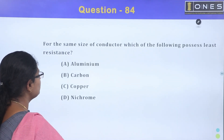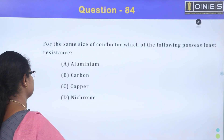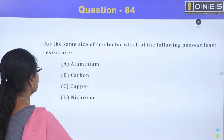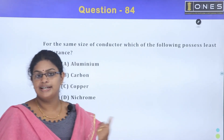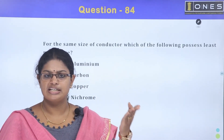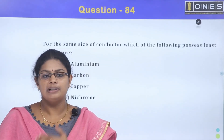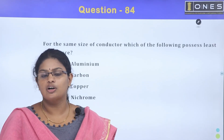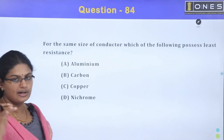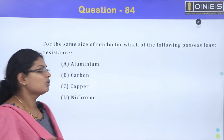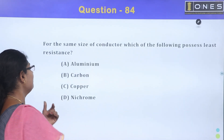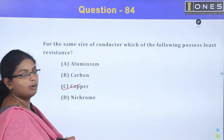For the same size of conductor, which of the following possesses least resistance? Option A, aluminum; Option B, carbon; Option C, copper; Option D, nichrome. The decreasing order of conductivity is silver, gold, copper, aluminum, mercury. Among the given options, copper has the least resistance. The answer is Option C, copper.